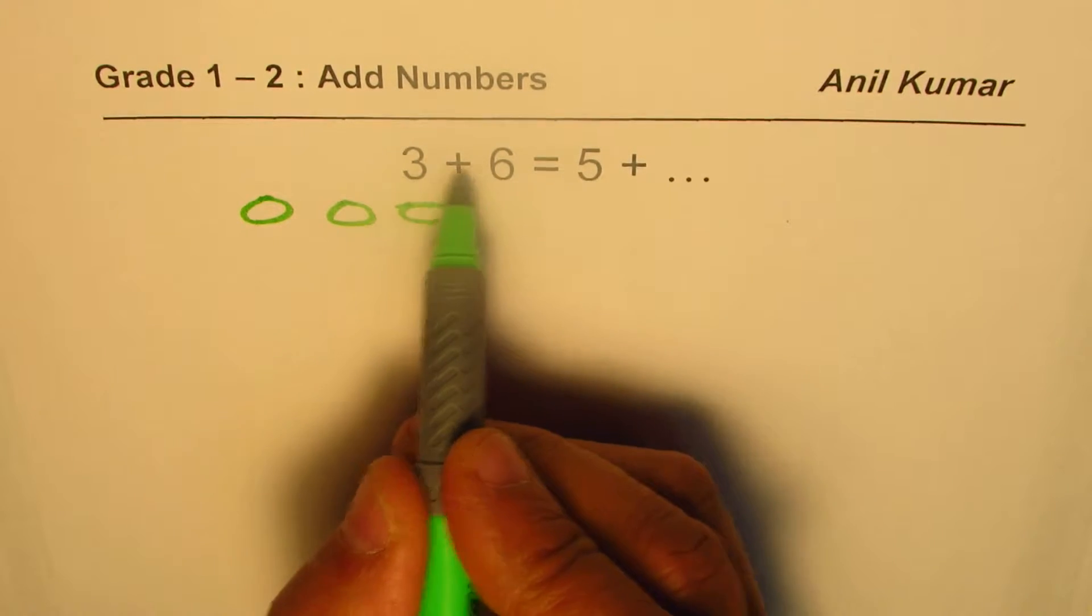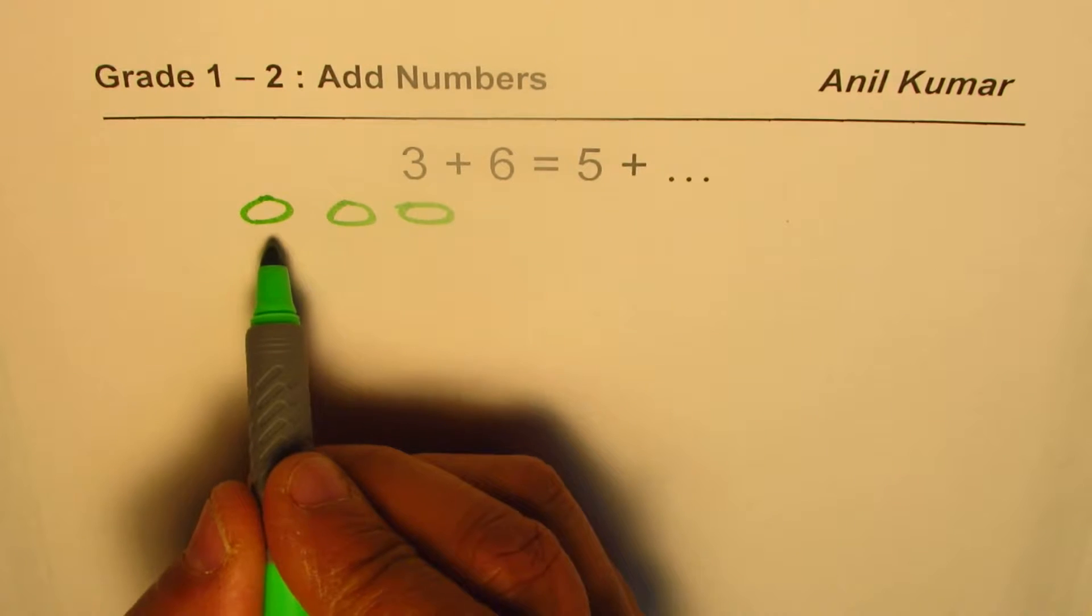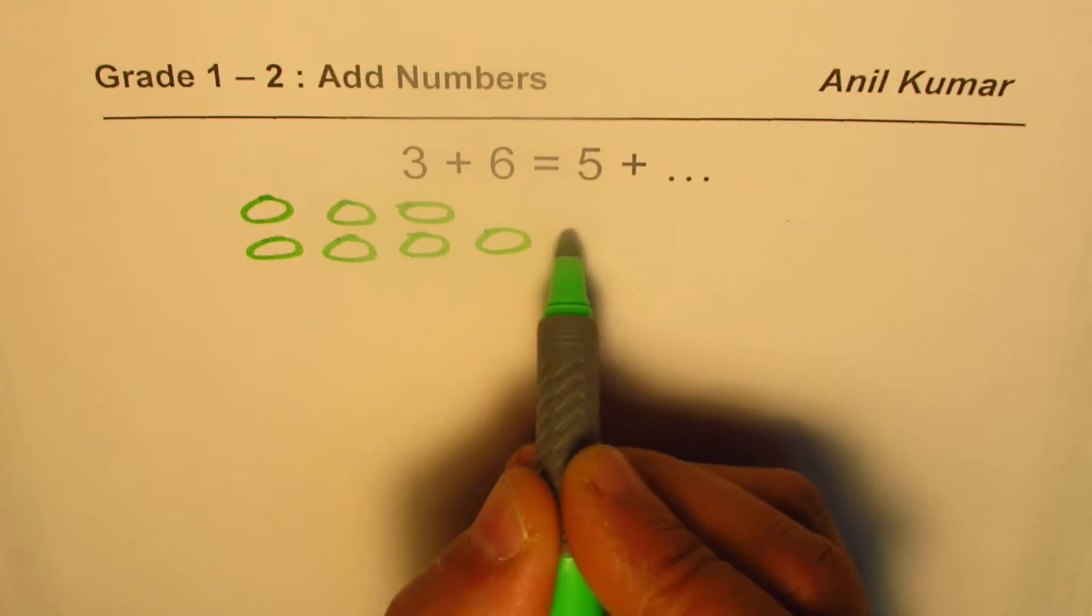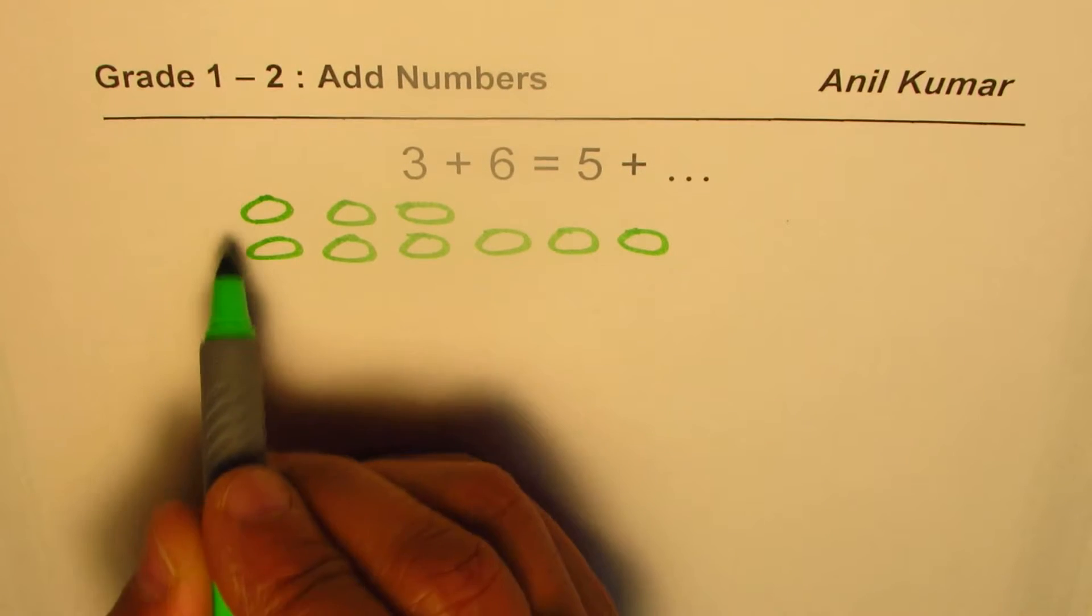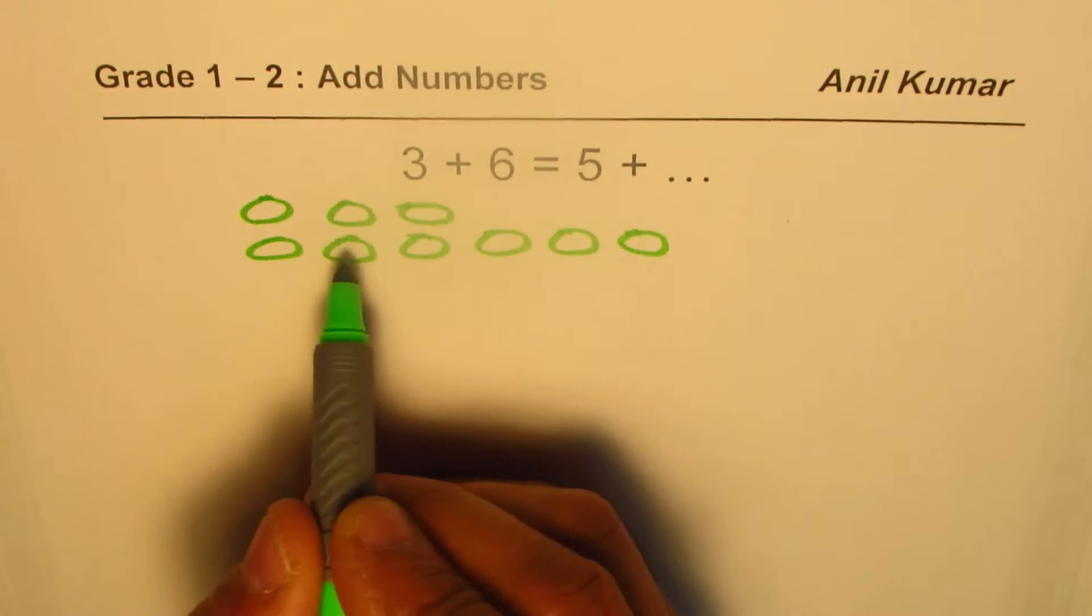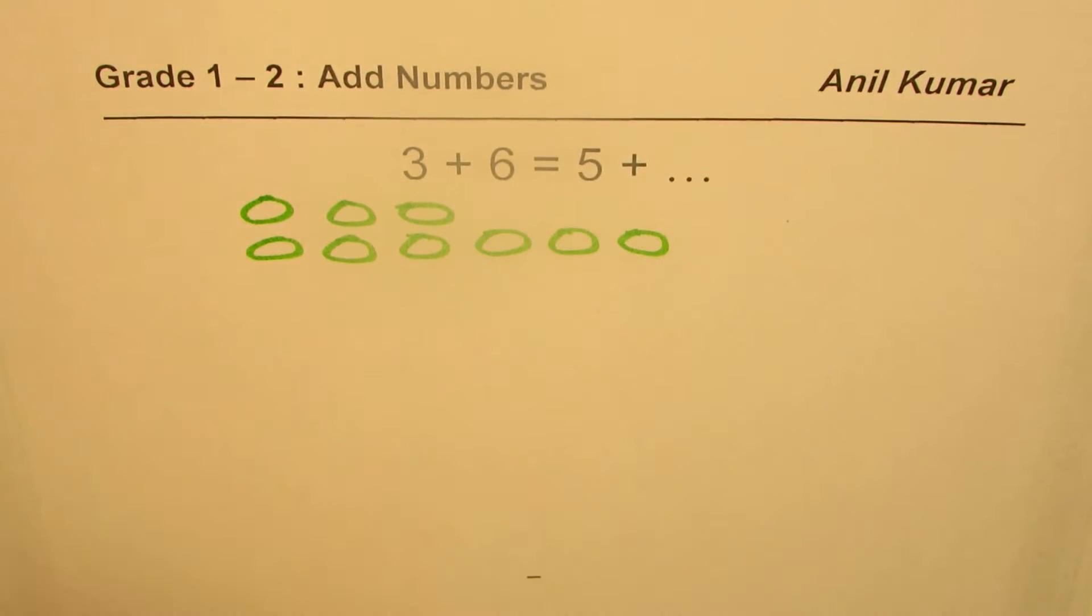When we say plus six, you have to add six more. So let's add six more: one, two, three, four, five, six. So we got 3 + 6 which is one, two, three, four, five, six, seven, eight, nine.